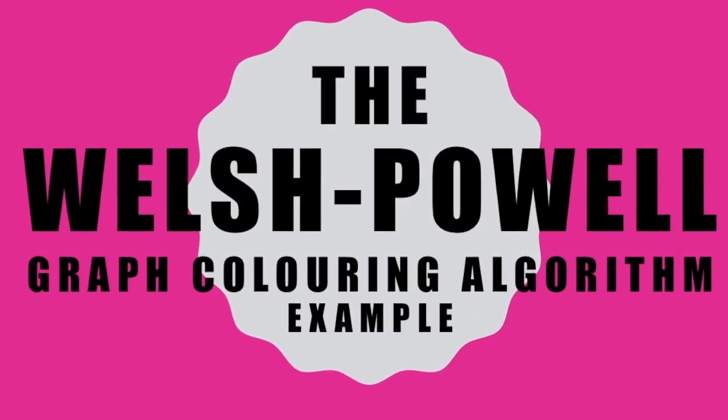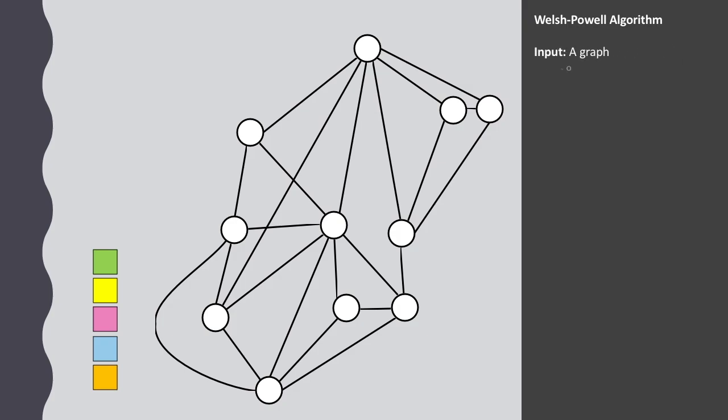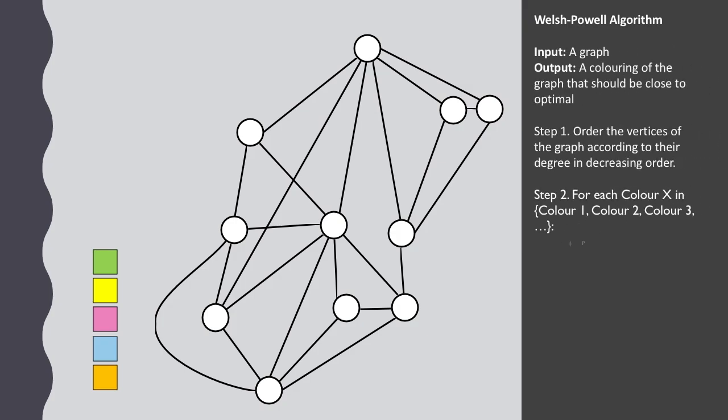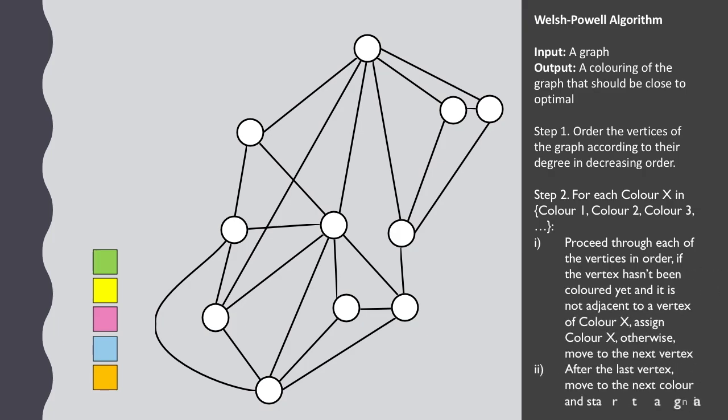The Welsh-Powell algorithm doesn't always find the graph coloring that uses the minimum number of colors, but it's usually pretty good and once again it allows us to proceed systematically rather than by trial and error.